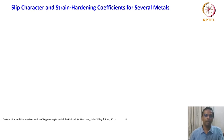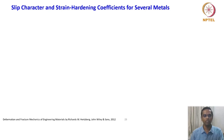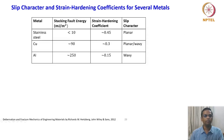In the last class we have looked at the engineering stress-strain curve and various parameters one can derive from that outcome of the results. We also looked at some derived parameters like true stress, true strain curve and what is the usefulness of this curve and how it is related to engineering stress-strain parameters. We will continue our discussion on that and what we are going to discuss today is how slip character and the strain hardening coefficients for several metals are compared.